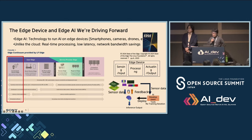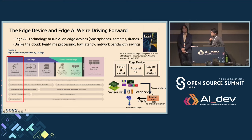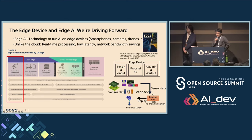Edge AI has several major advantages over the cloud. One is it can perform real-time processing — it processes data on the fly without waiting for it to be sent to the cloud, so it's great for situations where you need an instant response. It also saves network bandwidth; you use only the data you need and don't have to send a lot of data to the cloud. This is our definition.